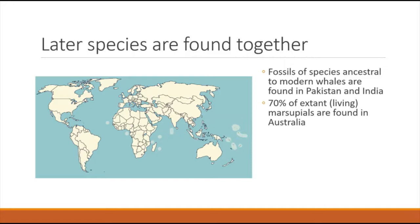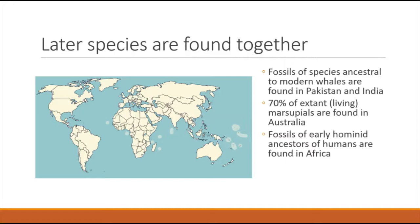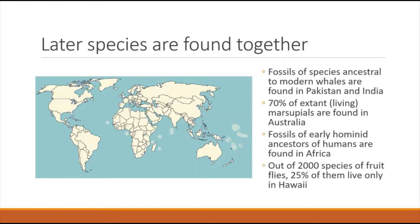Additionally, 70% of currently living marsupials are found in Australia, with only limited numbers elsewhere. Fossils of early human ancestors are only found on the African continent. And out of the 2,000 species of fruit flies that exist on the planet, 25% live only on the island of Hawaii. This clustering of more recent species is evidence that these species are related to each other and evolved from similar types of ancestors.